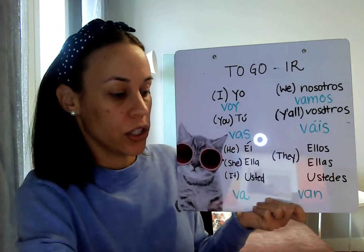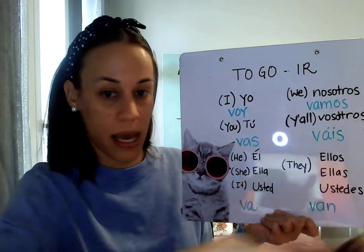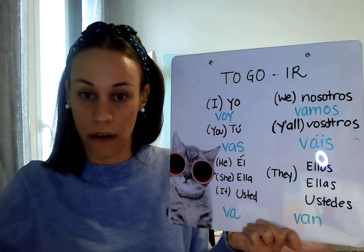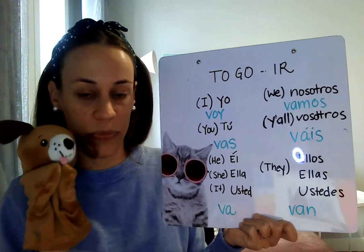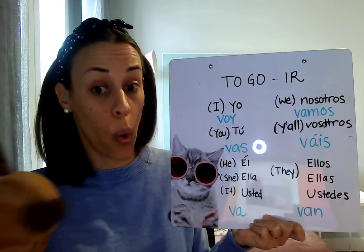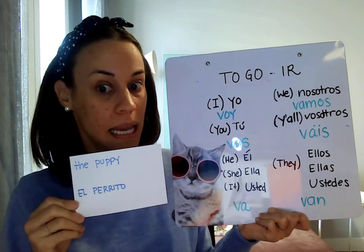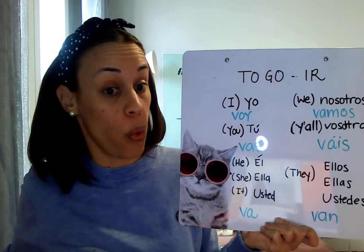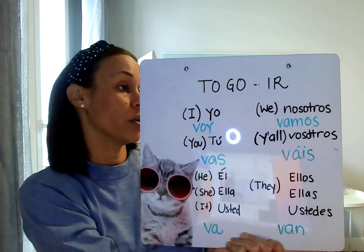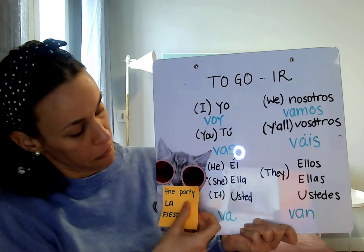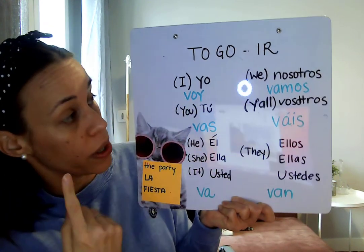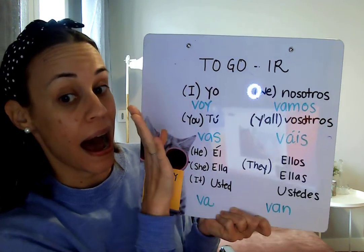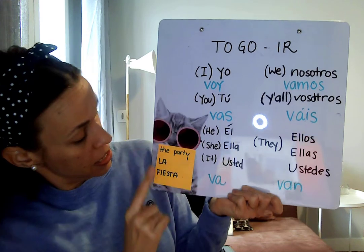Our next one: we have a very nice puppy right here. This puppy and I — we — so this puppy is called el perrito. The puppy and I, we, are going to go to the party. So we will say: nosotros vamos a — 'to' — a la fiesta.